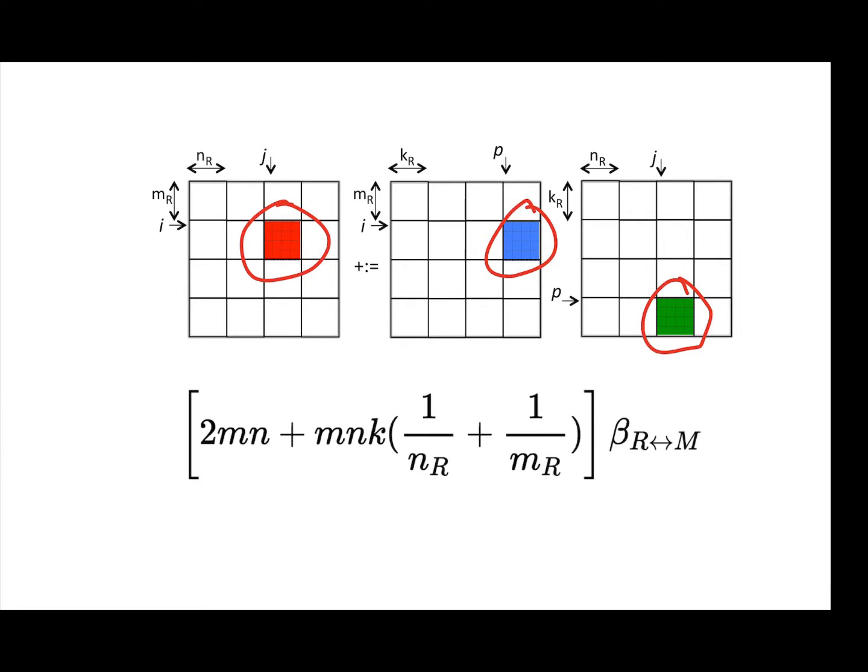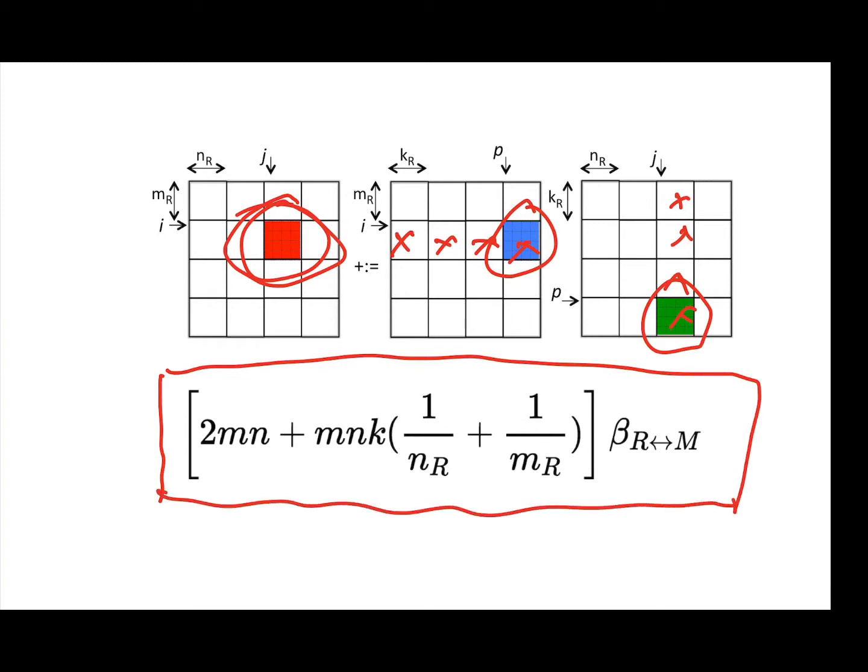And if you take into account that this block actually can stay in the registers as you perform computations with many blocks of A and B—namely this times that plus this times that plus this times that plus this times that—then you end up being able to calculate that the time spent in moving the data between registers and main memory is given by this formula right here.